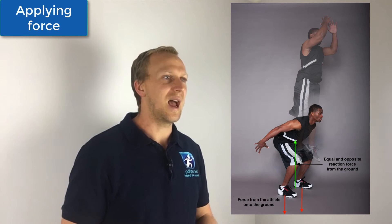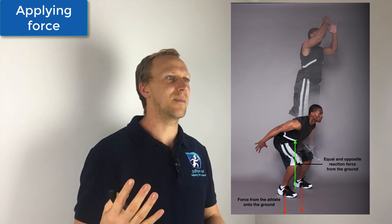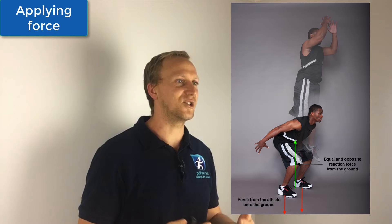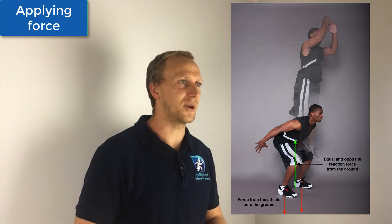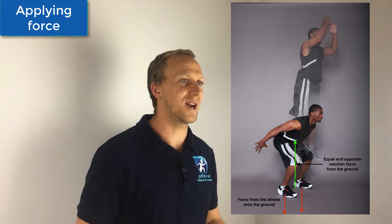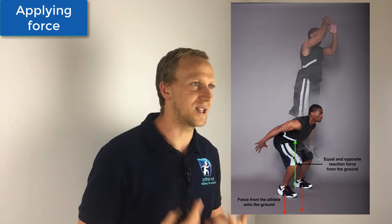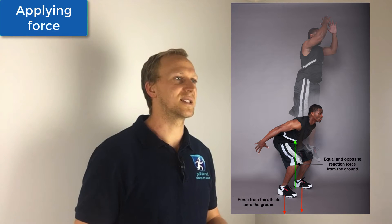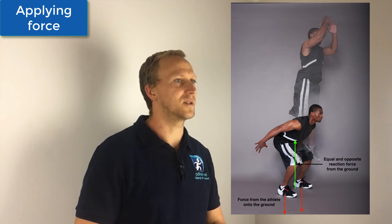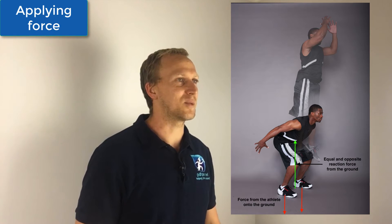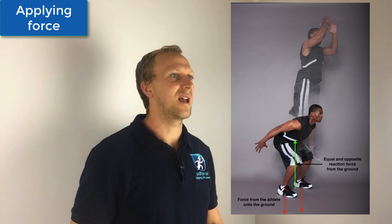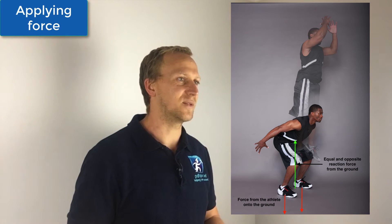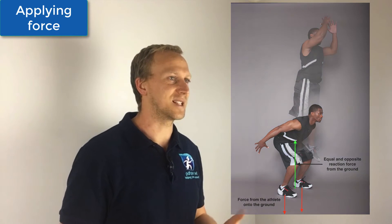If we think of the vertical jump, for example, we start by doing a downward loading — using gravity to allow our body to drop — and then we contract our muscles and push down into the ground. This causes an equal and opposite force from the ground which pushes us up as we jump, and also as our arms propel us forward and upwards as well.